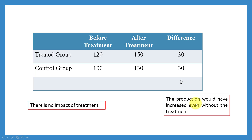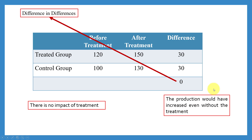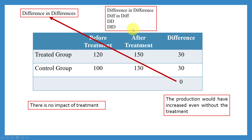So what we are seeing is that production would have increased even without the treatment. This technique is called difference-in-difference, also called difference-in-differences, diff-in-diff, DD, or DID. It is also called the Average Treatment Effect on the Treated, or ATET.